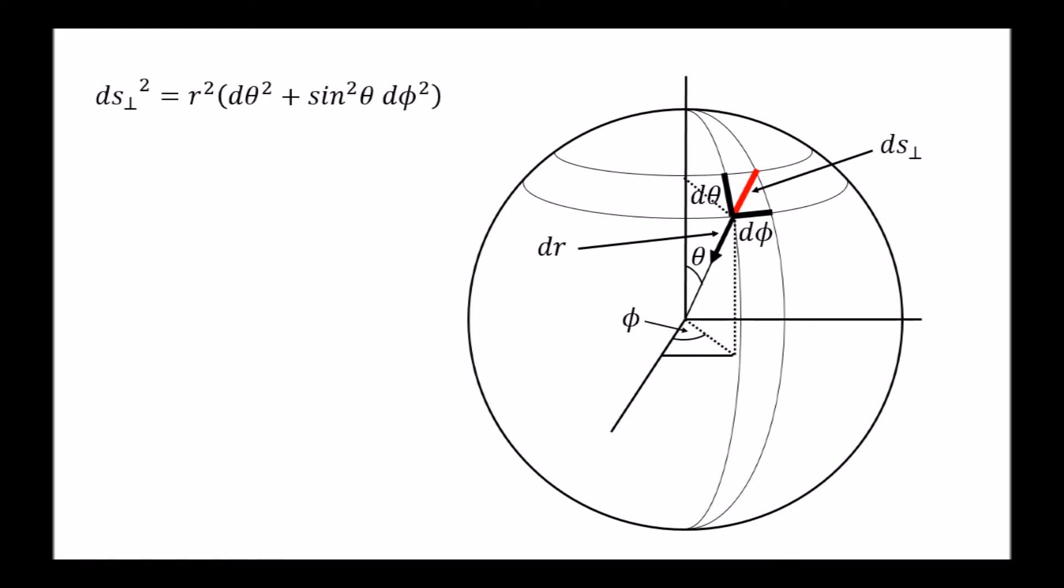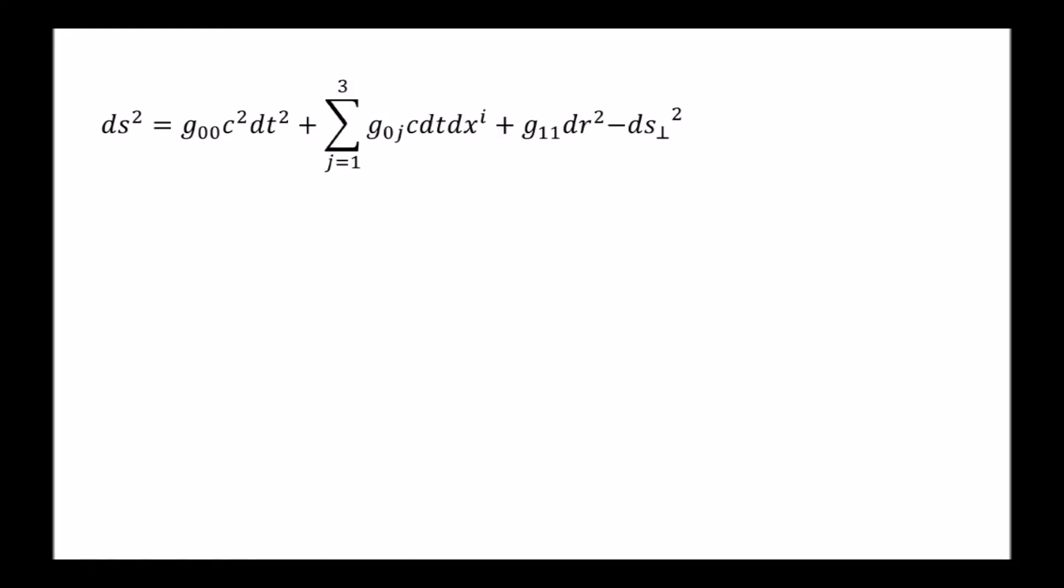The square spacetime distance then reduces to this. But we can go one step further. Remember, by making this coordinate transformation, and remembering that the metric is time-independent, we can write the spacetime distance in terms of the new coordinates, like this.